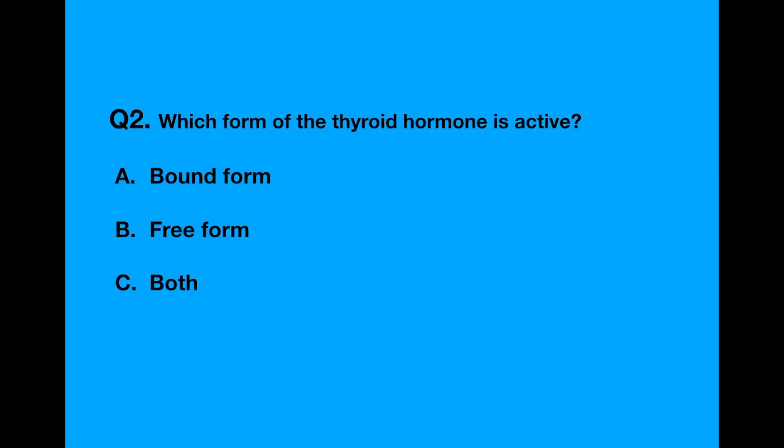Question number two. Which form of the thyroid hormone is active? Option A, bound form. Option B, free form. Option C, both.